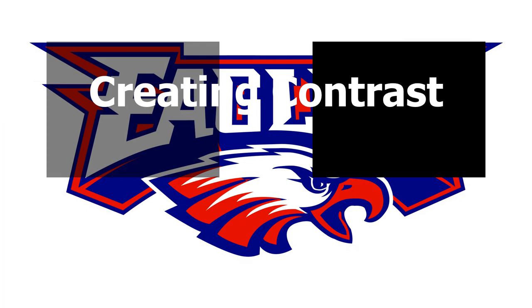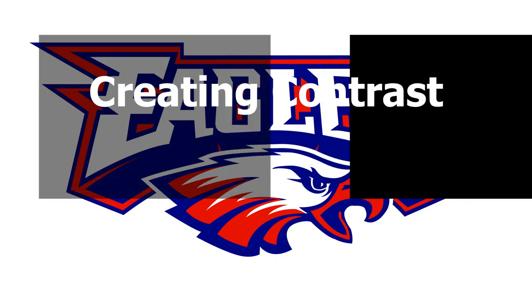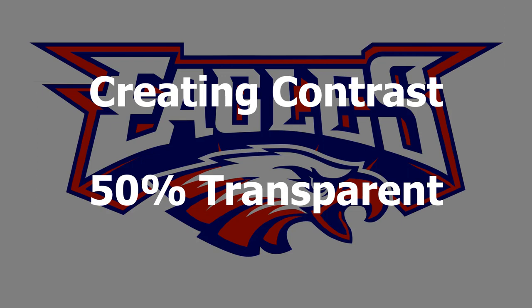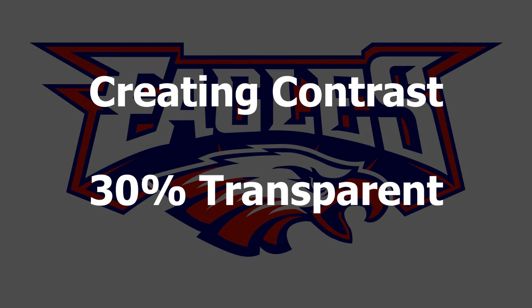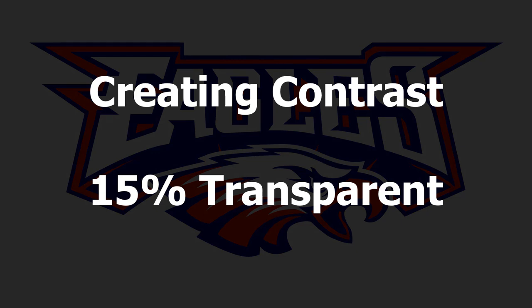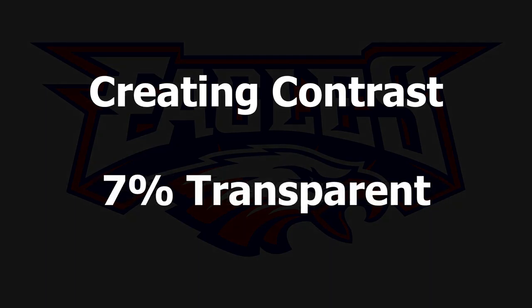There isn't a hard and fast rule on how much transparency to use on a rectangle — you just have to look at it, especially when it's being projected, to check if there's good contrast between the text and background graphic. At 50% transparency you can read the text but it's a little hard. At 30% it becomes much more legible. I like to be able to see the background picture but not have it dominate — at 15% I can do that. Once I get down really low, say 7%, it becomes difficult to tell what the background image is. So play around with the transparency until you get whatever value best suits the way you want to present the material.